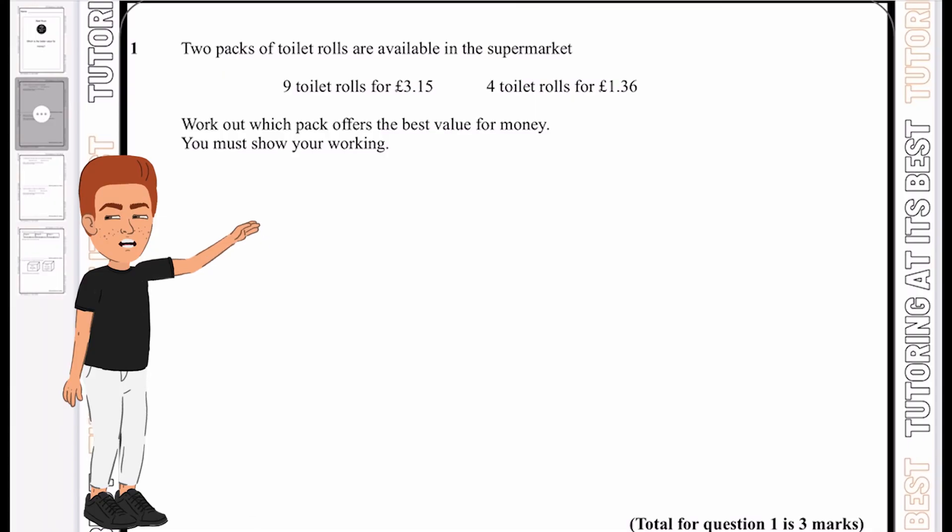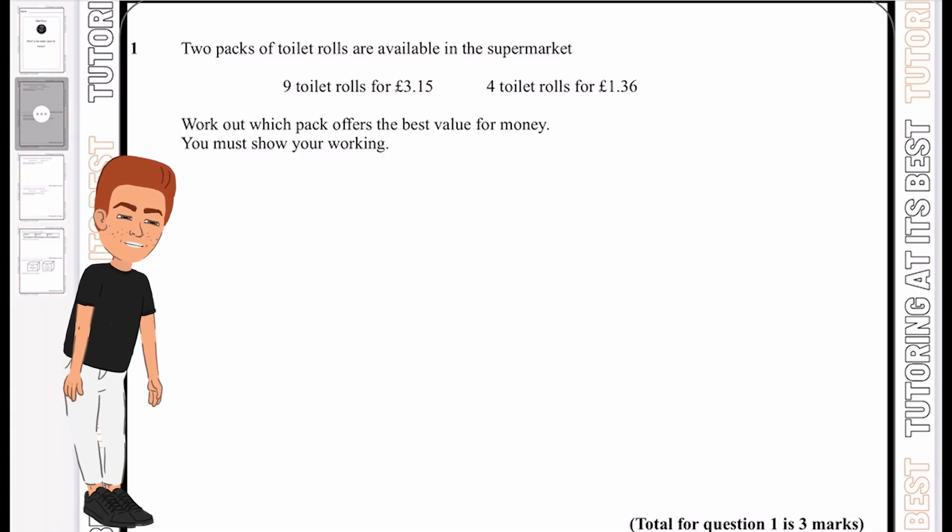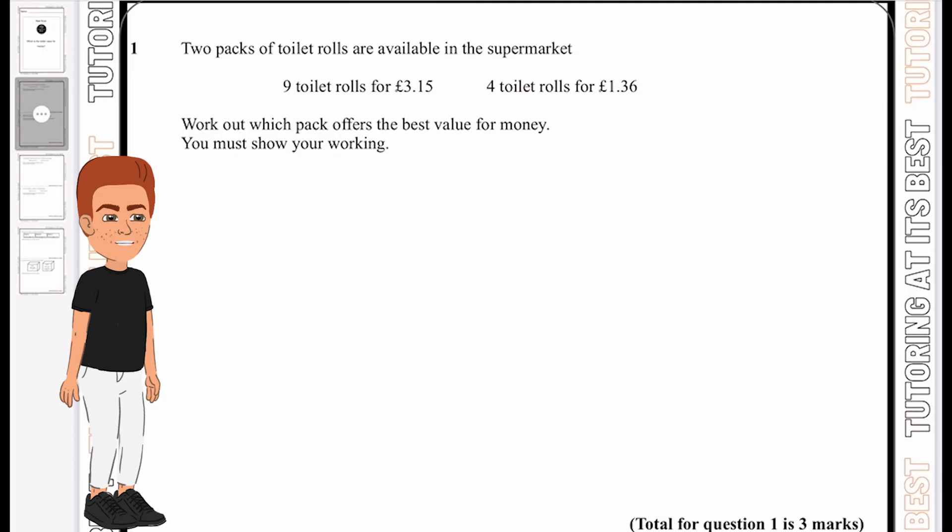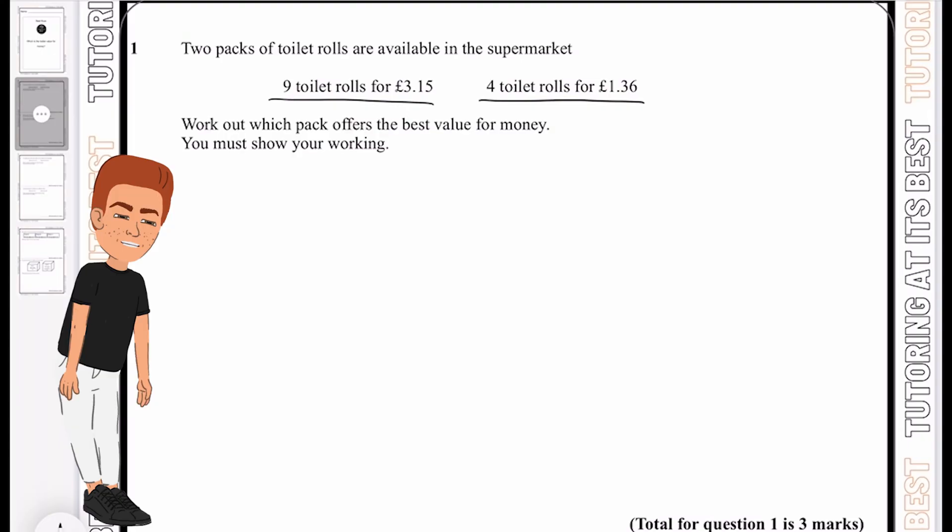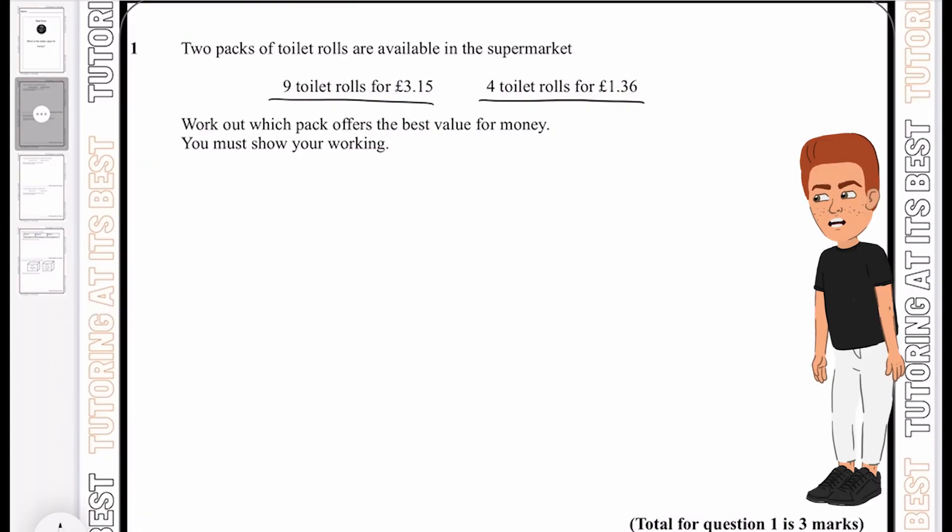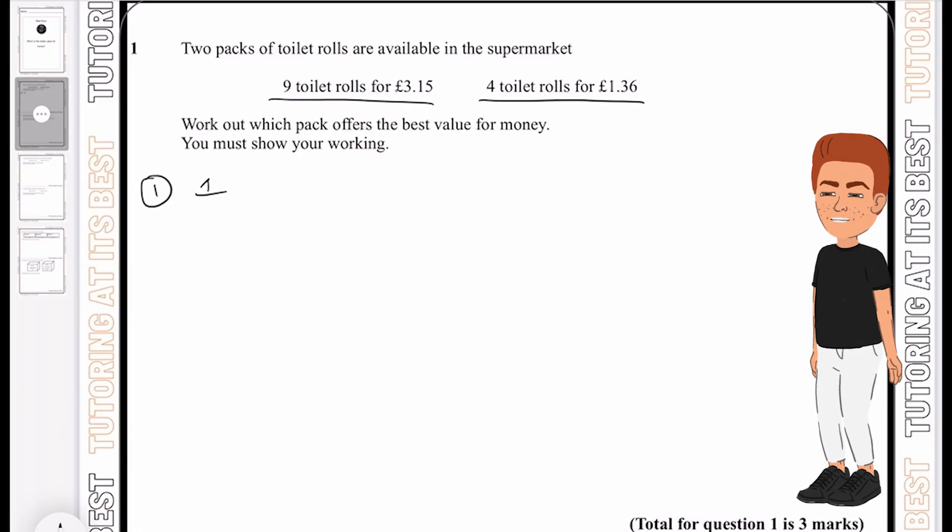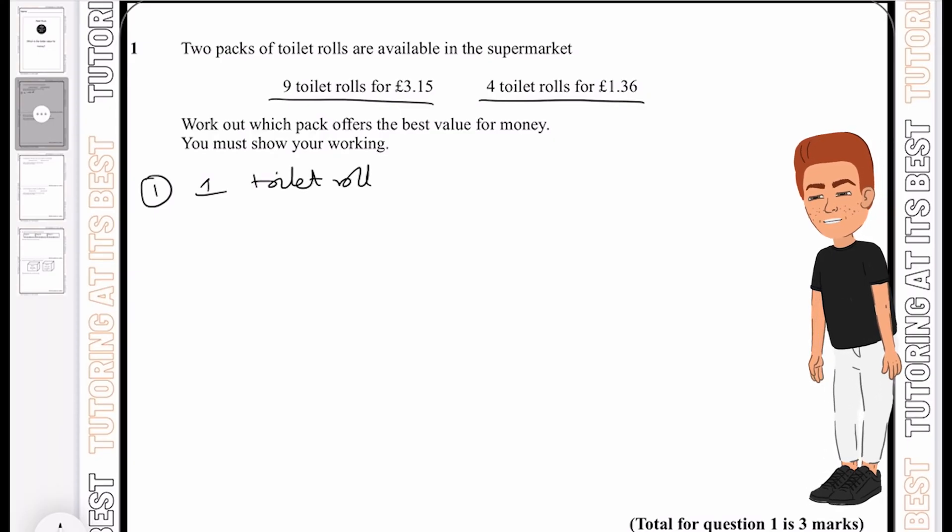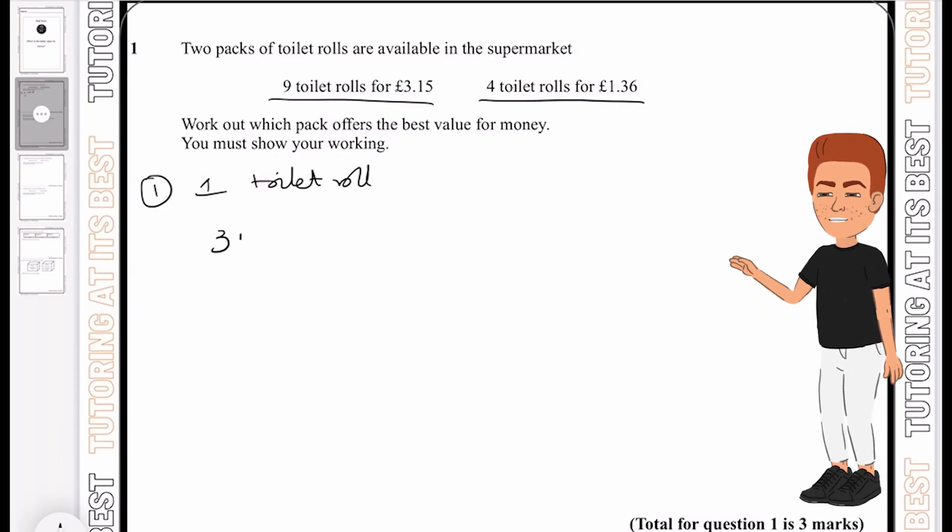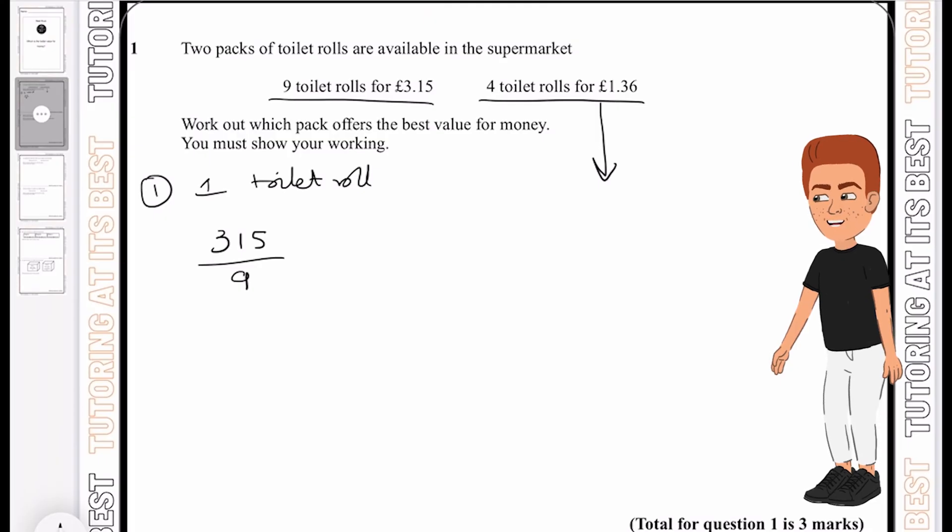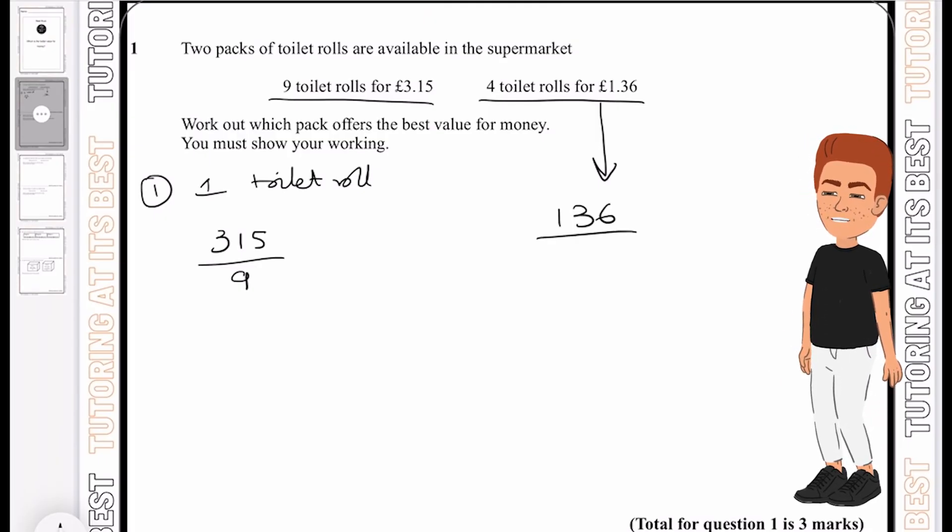Two packs of toilet rolls are available in the supermarket: nine toilet rolls for £3.15 and four toilet rolls for £1.36. We need to work out which pack offers the best value for money. The first thing I'm going to do is calculate one toilet roll by dividing the total amount by the number of toilet rolls.